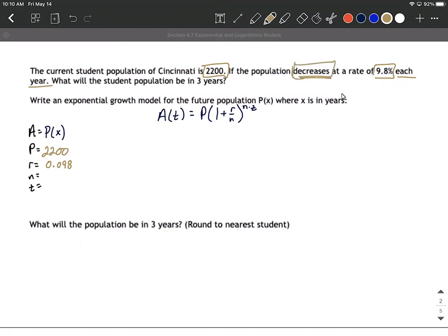Decreasing means it's getting smaller. That means our rate has to be negative. And this is each year, so N is going to be one.